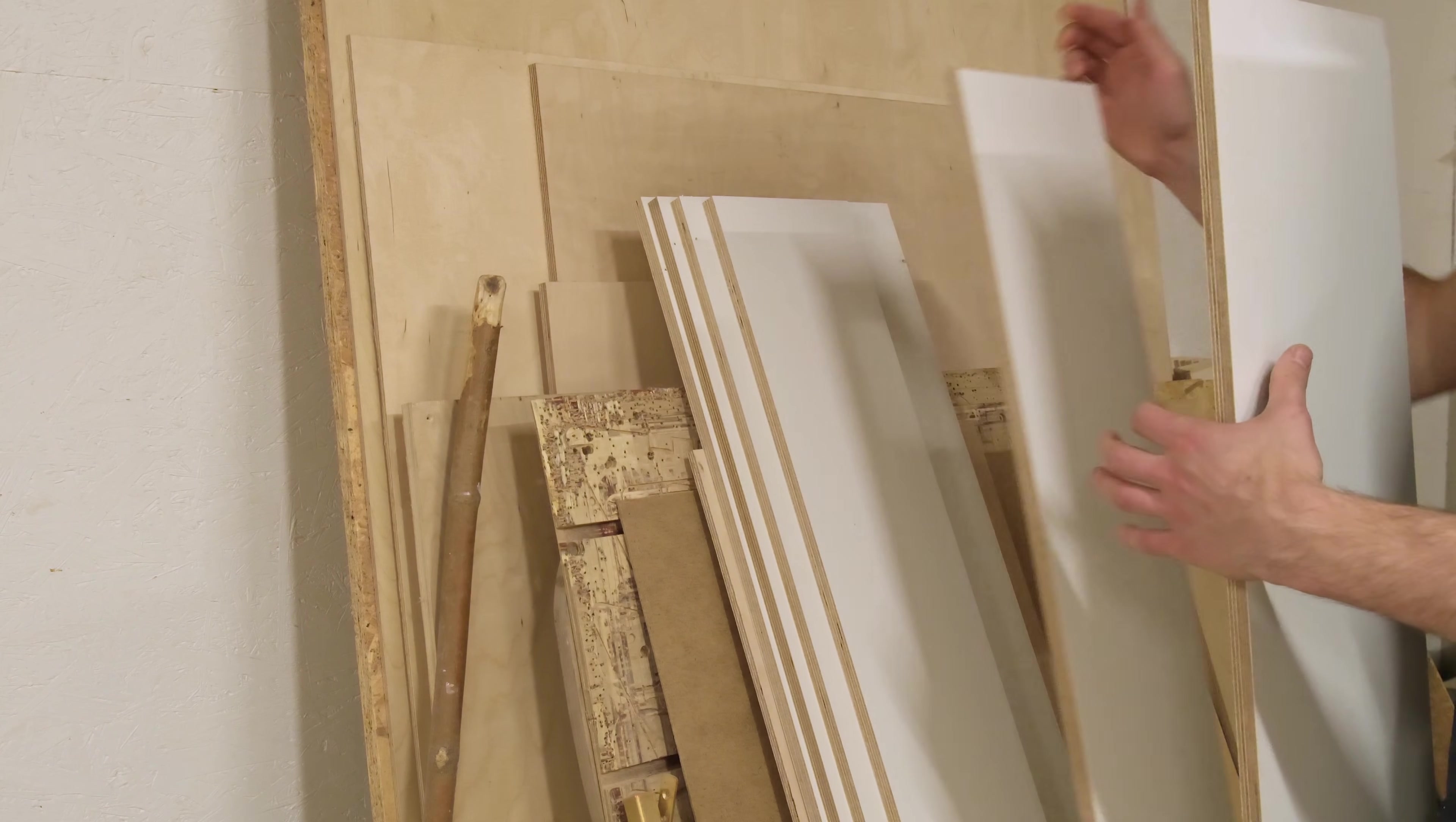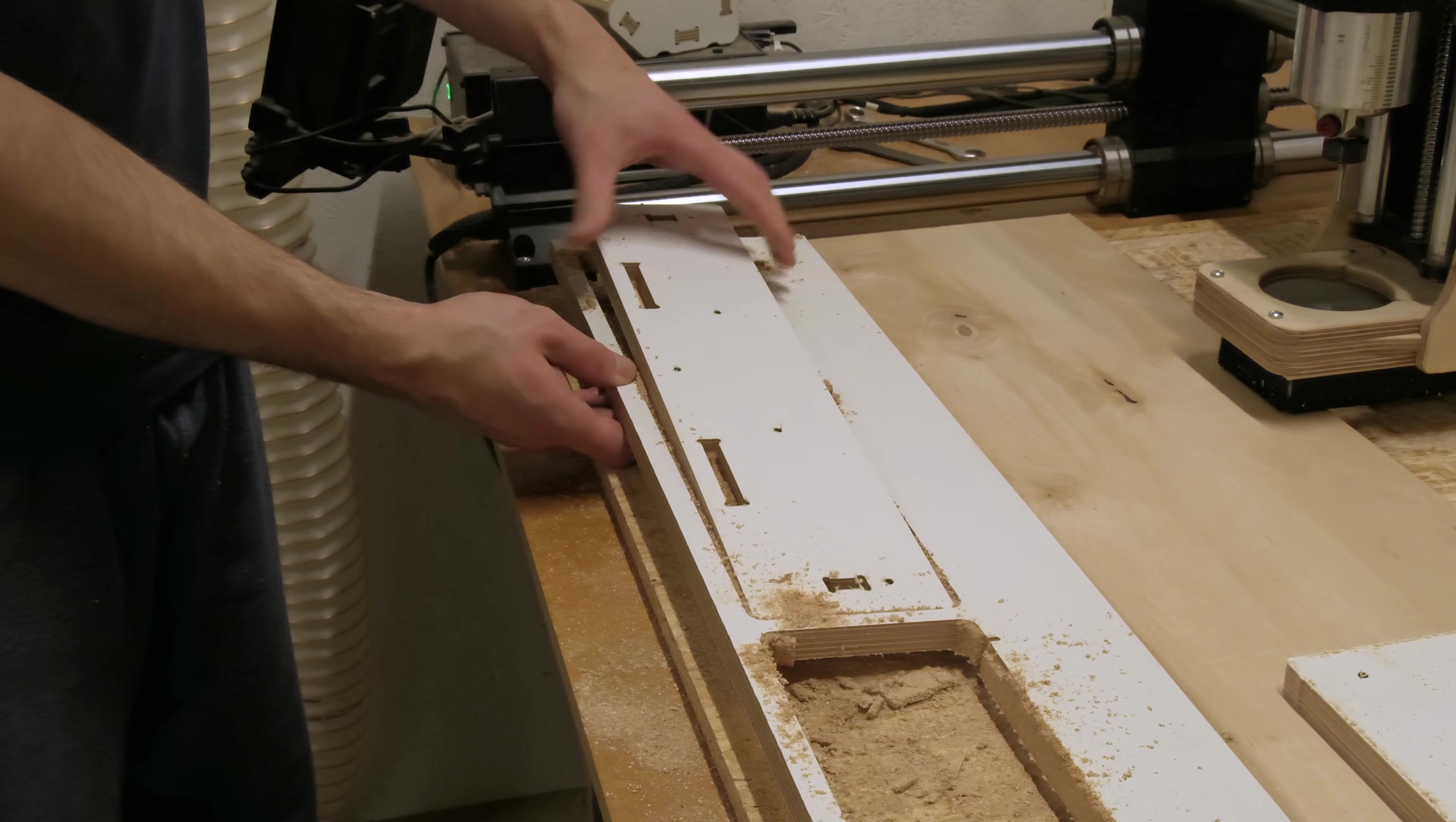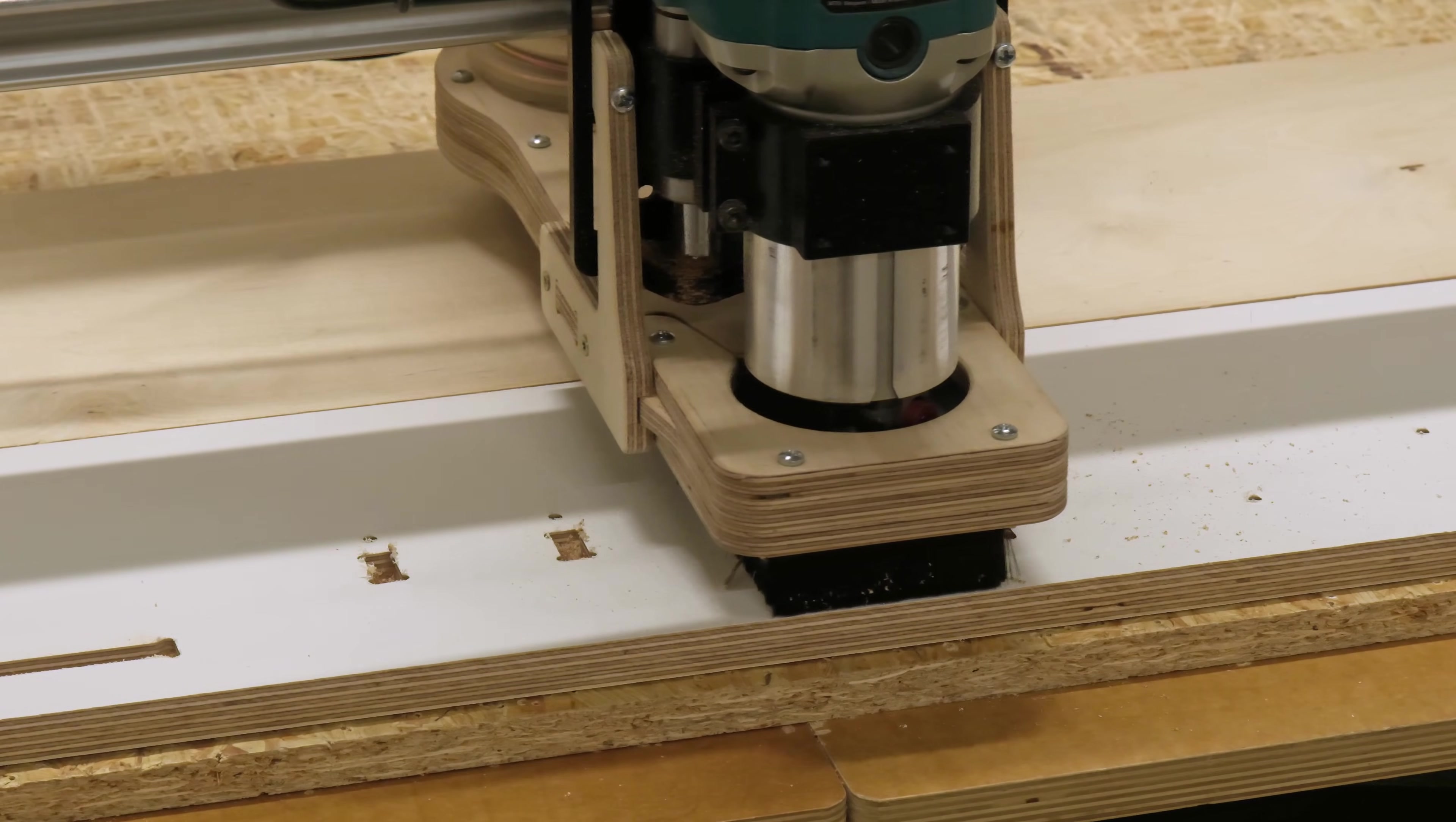Next we cut the drawer fronts from white laminated plywood, which we had left over from the modular workbench build. Trimming the edges while the CNC works on the next components keeps things moving smoothly.